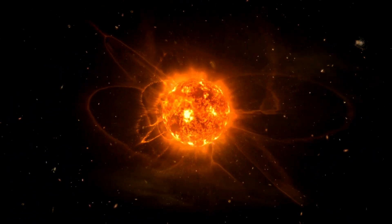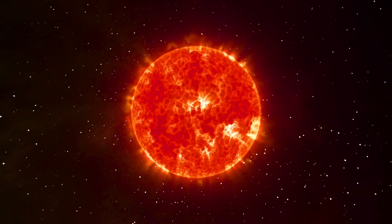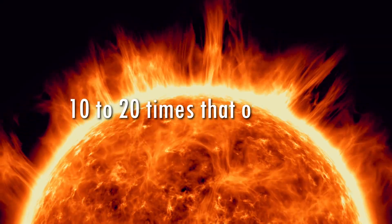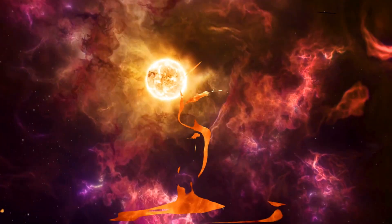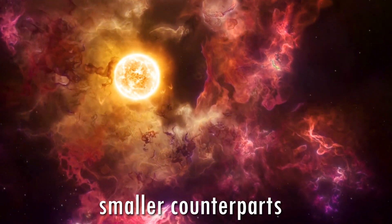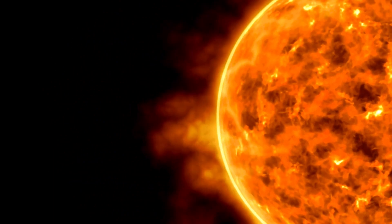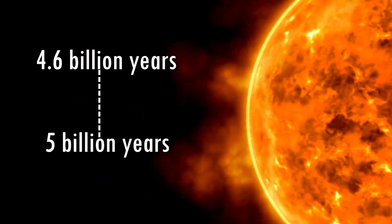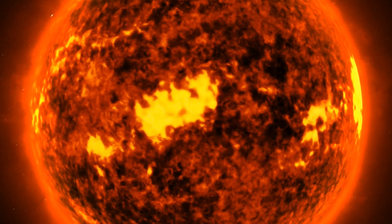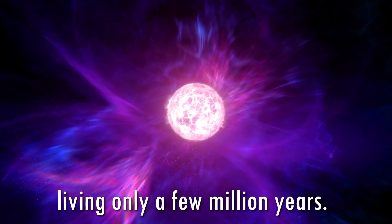Betelgeuse began its existence as a main-sequence star, similar to our Sun. What sets it apart is its immense mass, estimated to be between 10 to 20 times that of the Sun. Such massive stars have much shorter lifespans compared to their smaller counterparts. While our Sun has been shining for about 4.6 billion years and is expected to last another 5 billion years, massive stars like Betelgeuse consume their nuclear fuel at a significantly faster rate, living only a few million years.